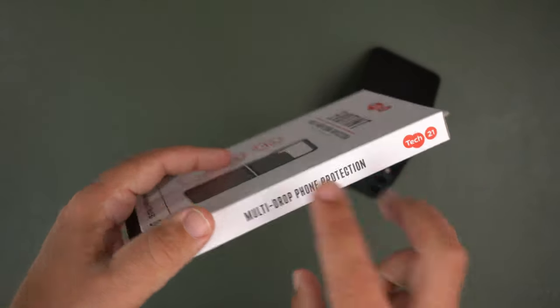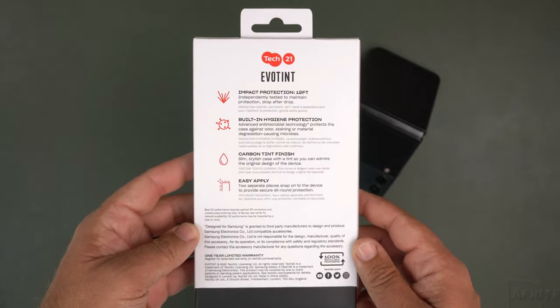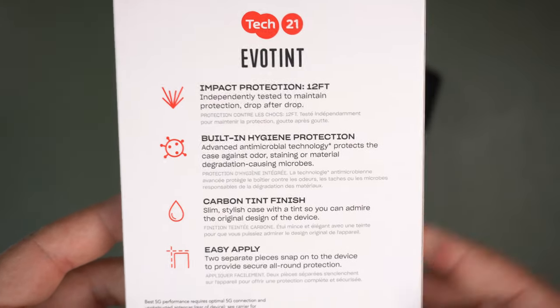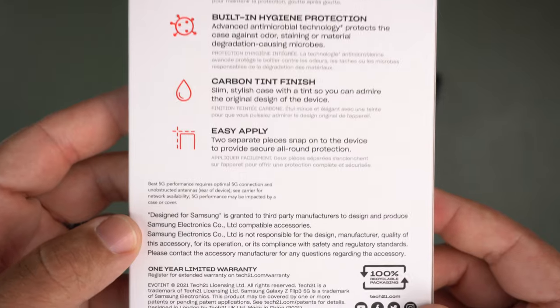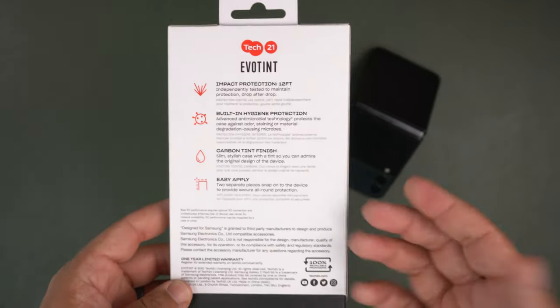On the sides it says multi-drop phone protection. On the back there's a breakdown saying impact protection from 12 feet and it says easy apply, so it's two separate pieces that snap together.